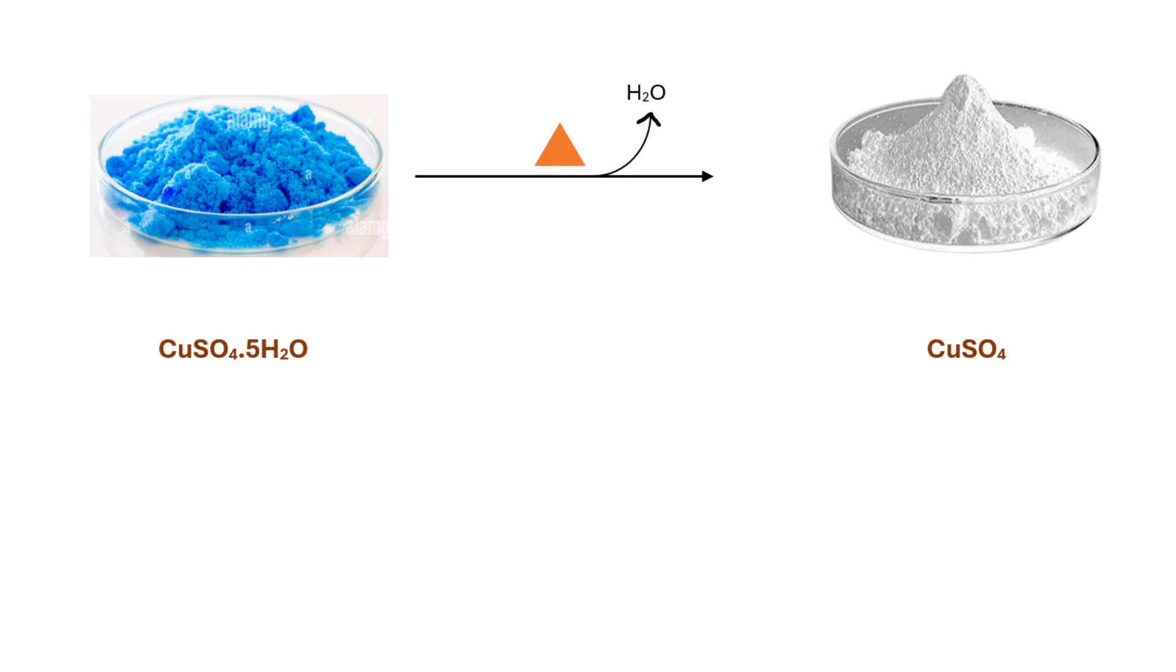When hydrated copper sulfate completely gets dehydrated, it becomes anhydrous copper sulfate which is white in color. Anhydrous copper sulfate has an orthorhombic structure.